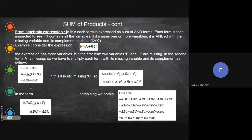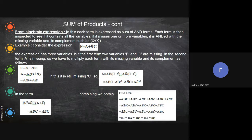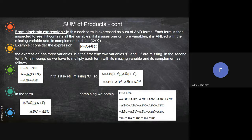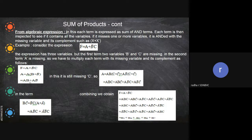When we look at the combined terms, a b̄c appears twice — from expanding the first term and from the second term. In Boolean algebra, a + a = a, so we write it only once. All other terms are distinct. So after removing the duplicate, we have five terms total.